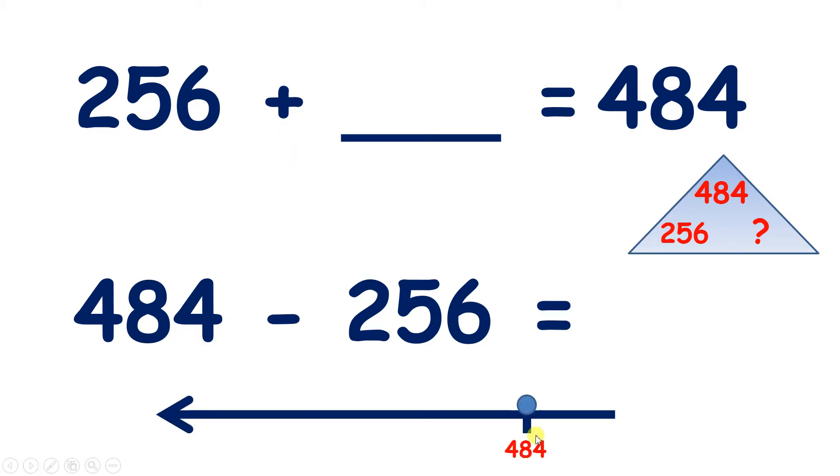So if we start on 484, we need to subtract 200s, 5 tens and 6 units. Subtracting 200s from the 400s we started with leaves us with 284. Now we can subtract 5 tens from our 8 tens, which gives us 3 tens, so 234.